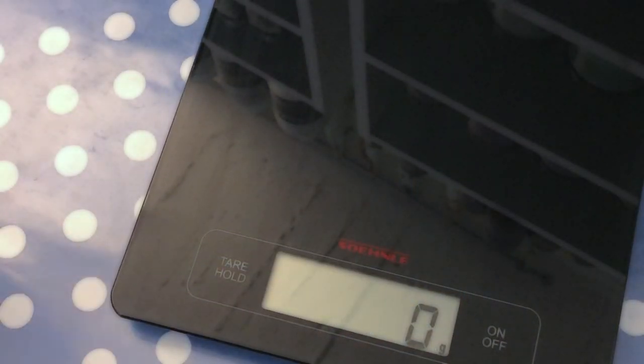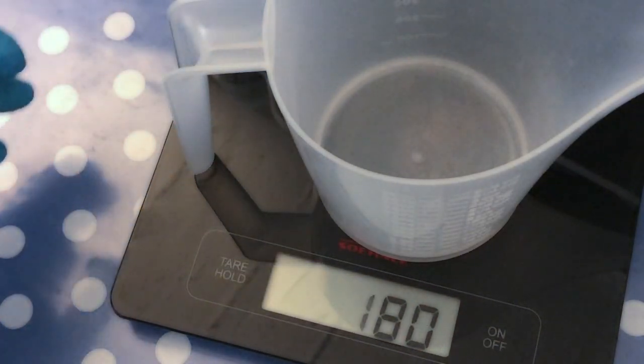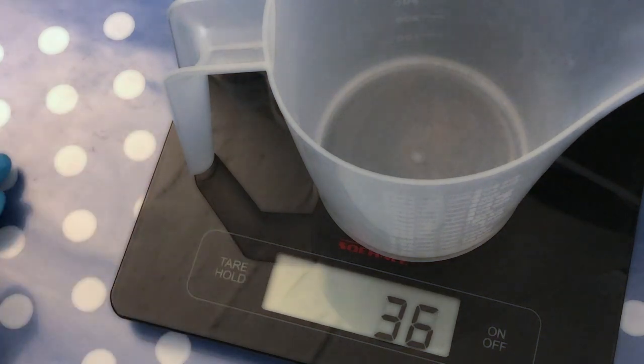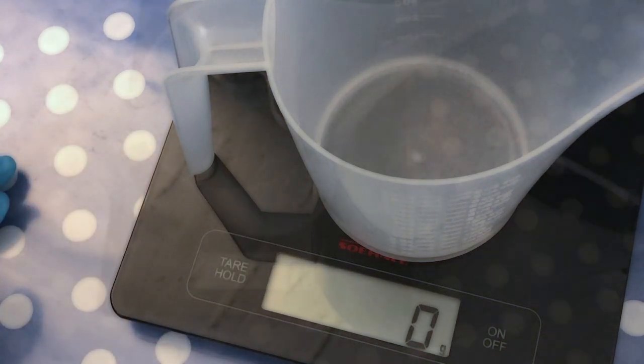Very important for your soap making, always wear safety goggles and gloves, closed-toed shoes and long-sleeved shirts. Now, the first thing that we're going to do is we're going to weigh out our distilled water. You want to use a scale for that.